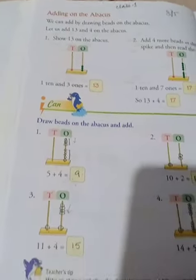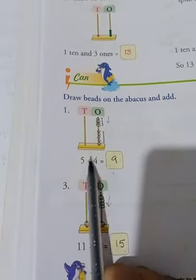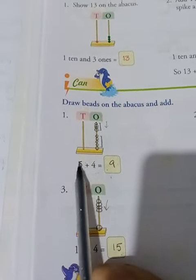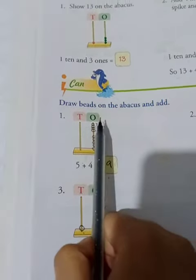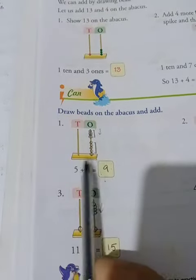So 13 plus 4 is 17. Next example: 5 plus 4. Draw 5 beads: 1, 2, 3, 4, 5. And add 4 more: 1, 2, 3, 4. So 5 plus 4 equals 9.